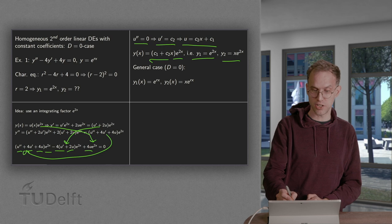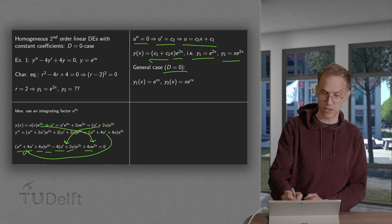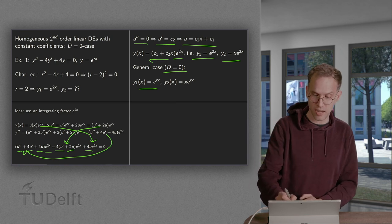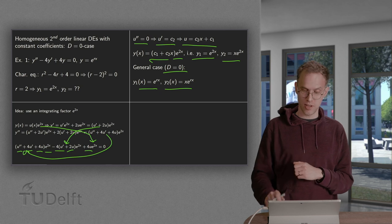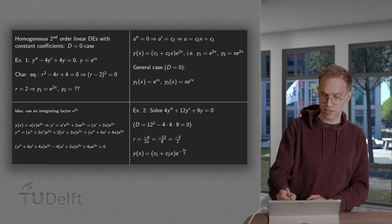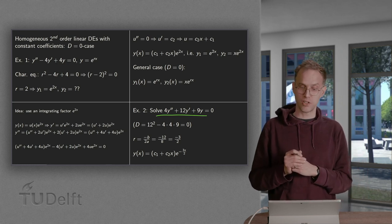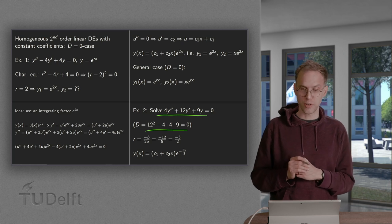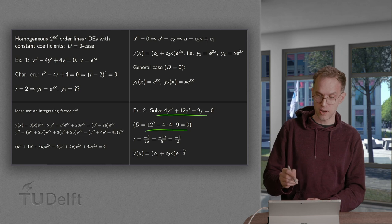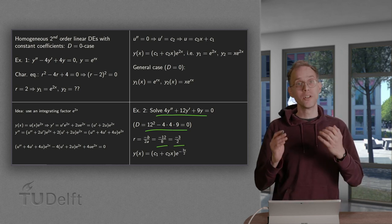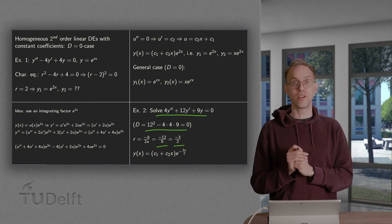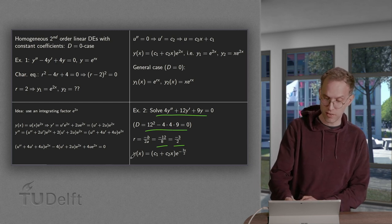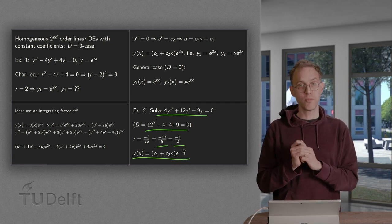This works in general when the discriminant equals zero. The first independent solution is e^(rx) and the second independent solution is x·e^(rx). For example, with the equation 4y'' + 12y' + 9y = 0, the discriminant is 12² - 4·4·9 = 0, so D = 0. We get r = -b/(2a) = -12/8 = -3/2. Our two independent solutions are e^(-3x/2) and x·e^(-3x/2), giving the general solution y(x) = c1·e^(-3x/2) + c2·x·e^(-3x/2).